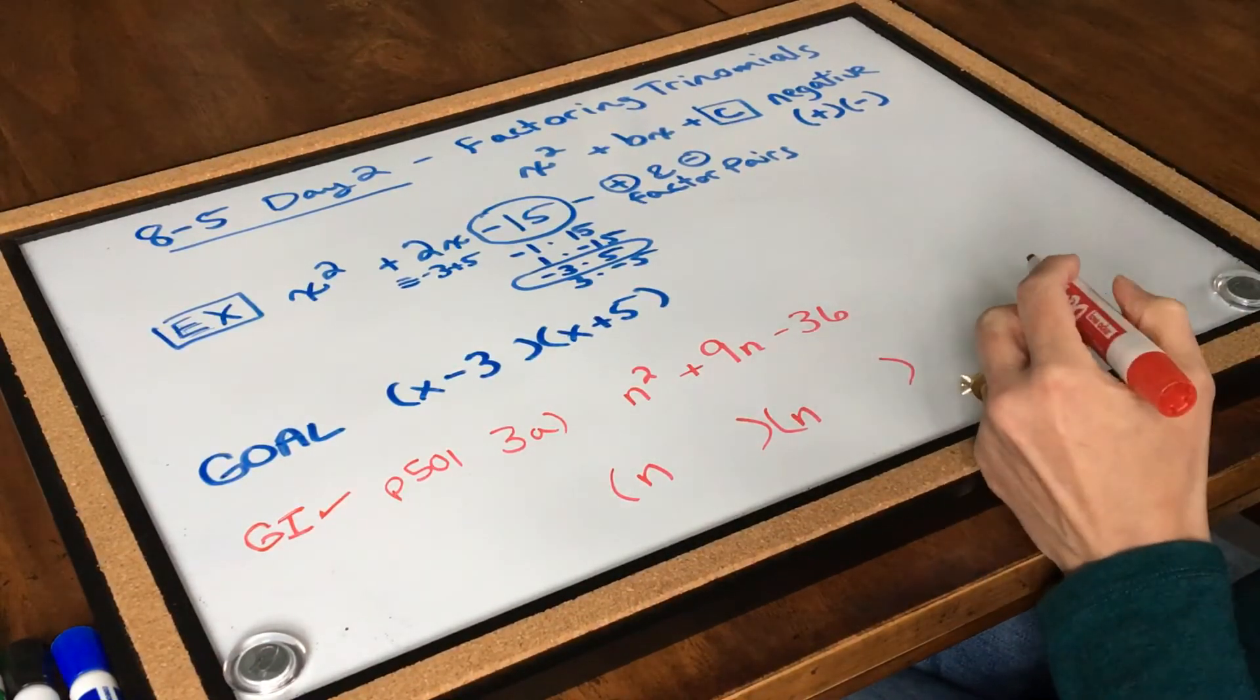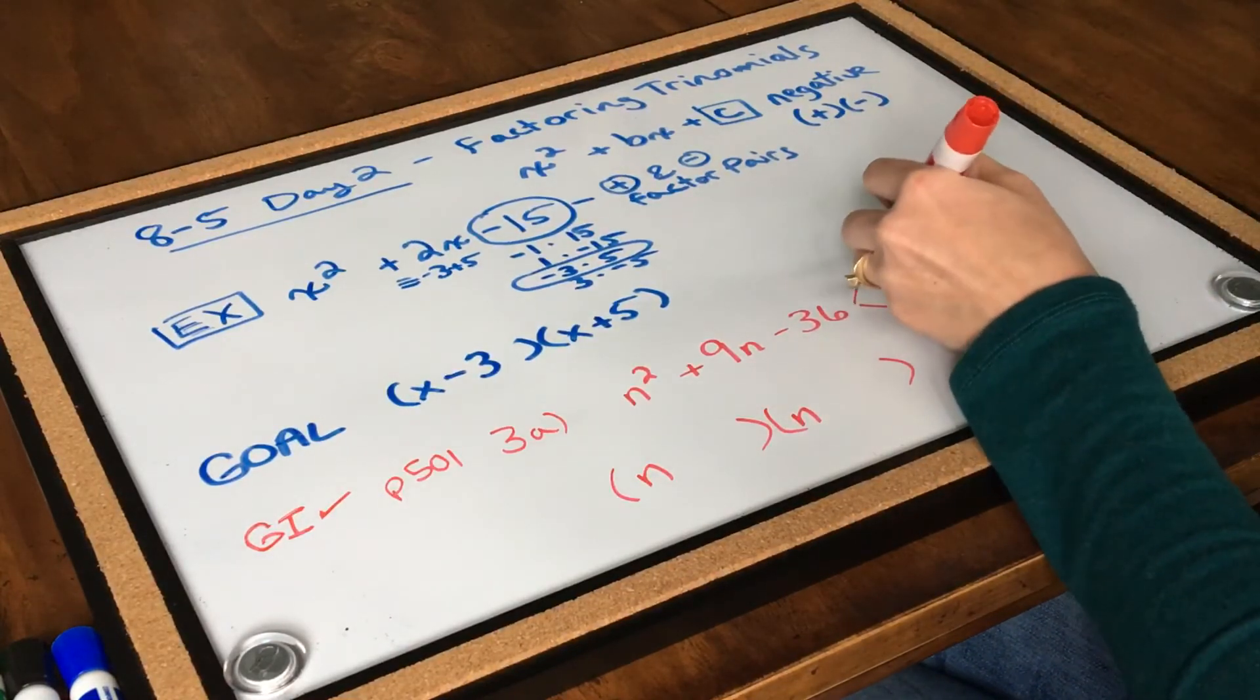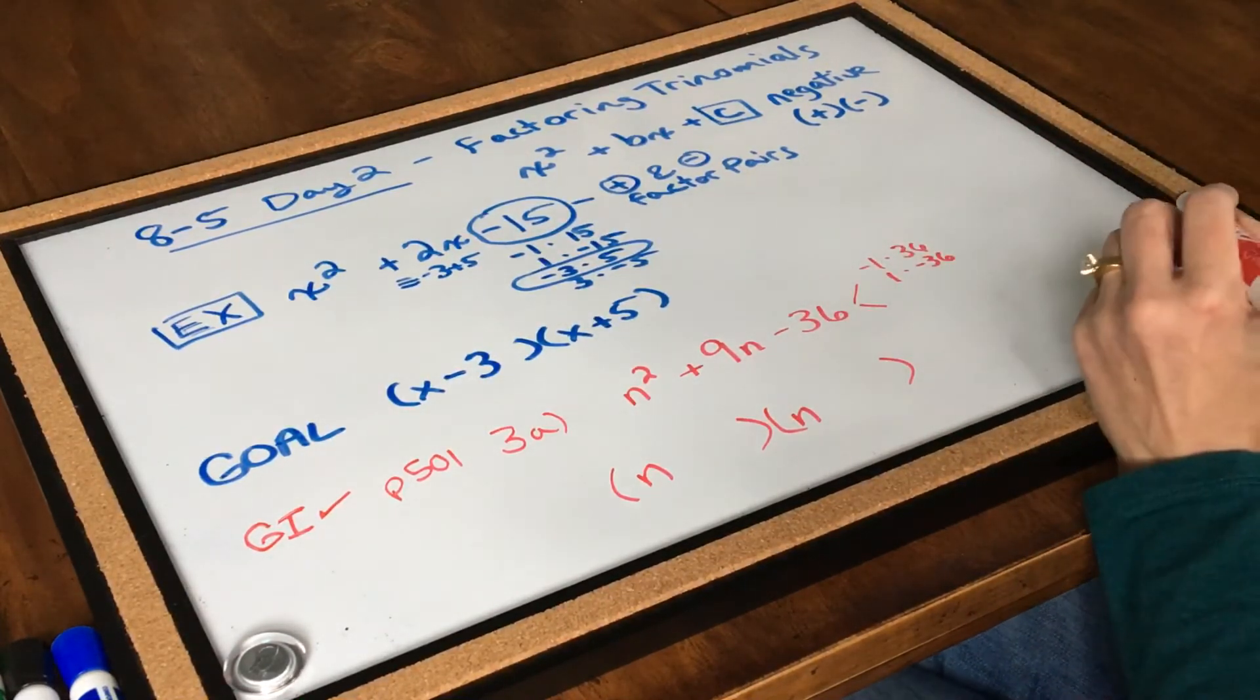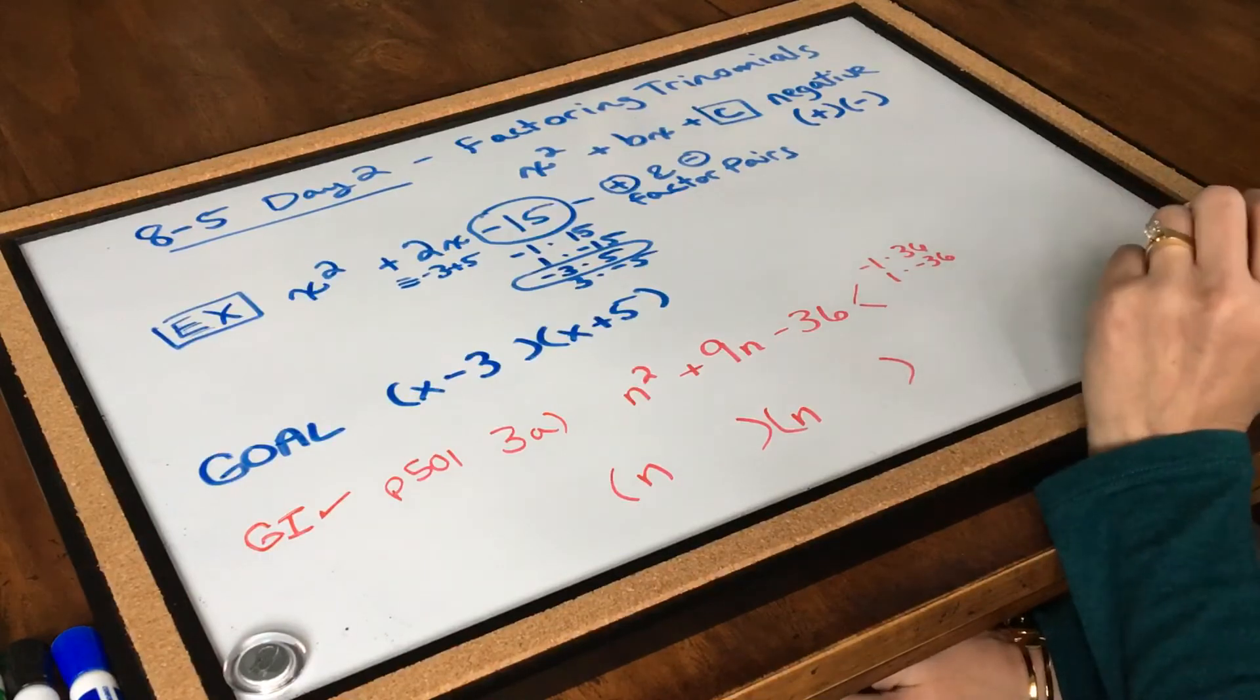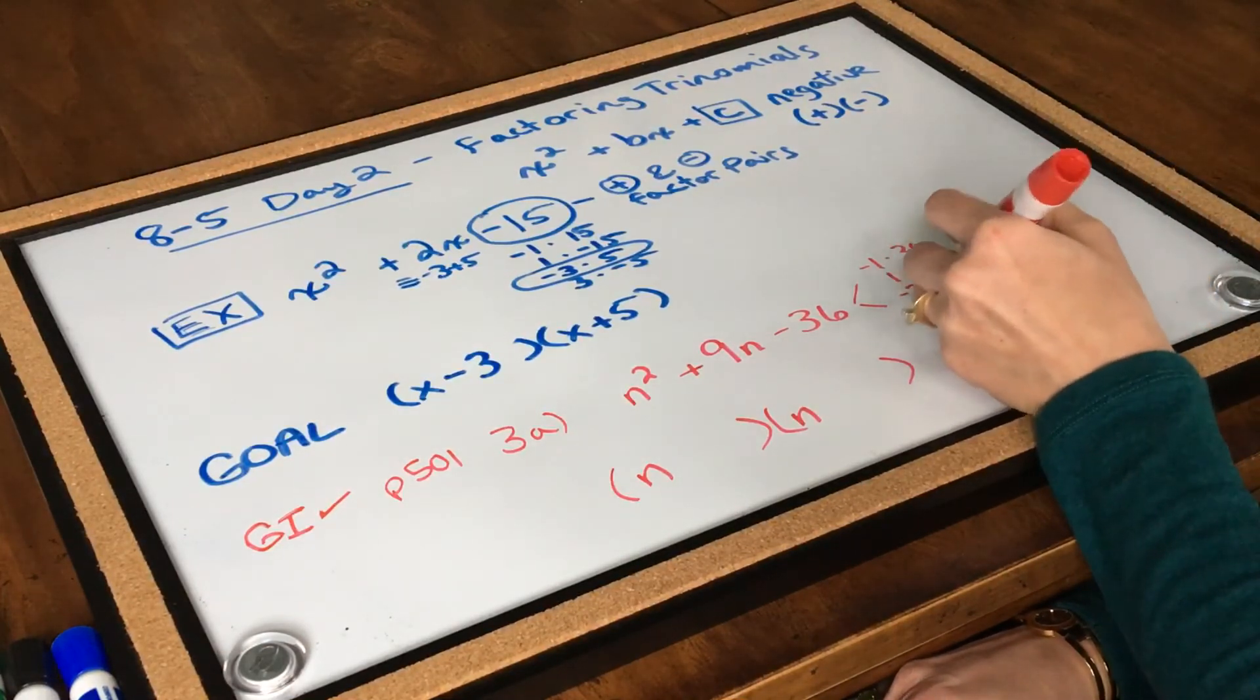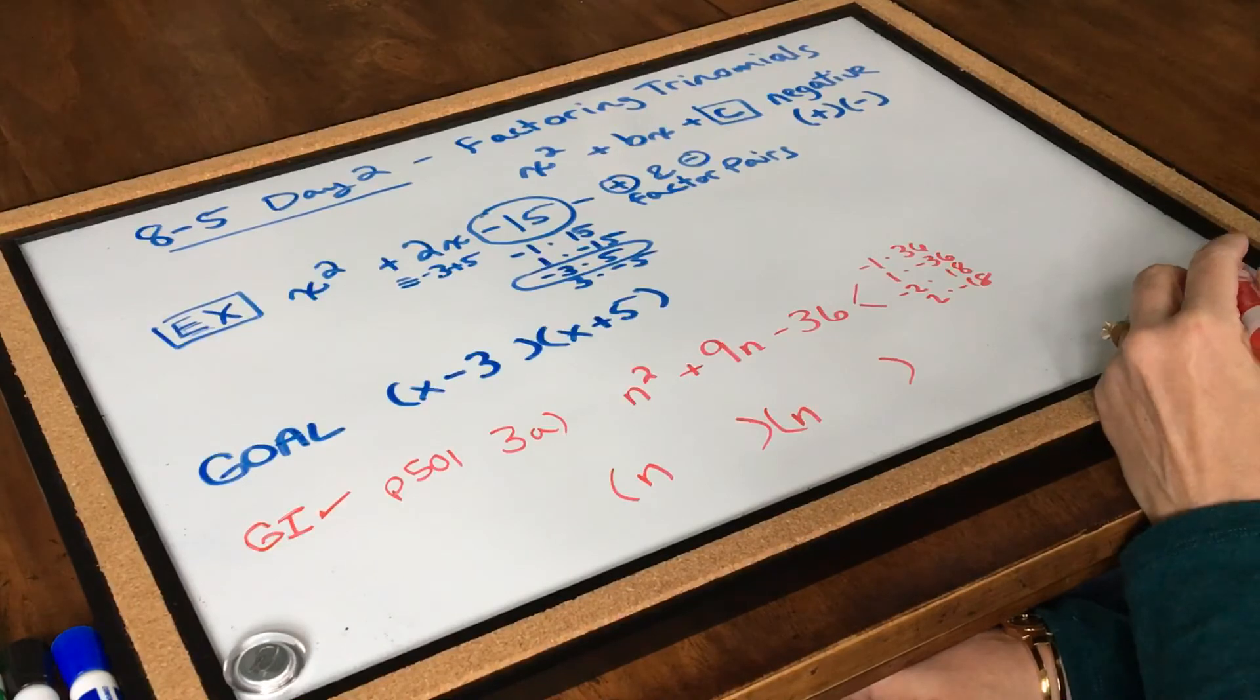Usually I write them underneath, but there's so many, I'm going to write them over here on the side. So let's find our factor pairs of 36. I could have negative 1 and positive 36. I could also have positive 1, negative 36. Neither of those added up will get me to 9. What about 2 and 18? I could have negative 2 times positive 18 or positive 2 times negative 18. But this would add up to 16 or negative 16. So again, won't get me 9. Let's keep going.